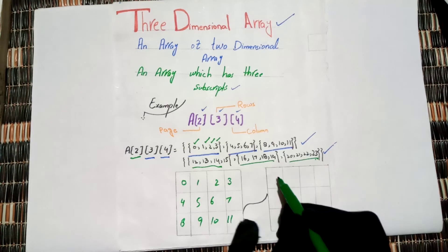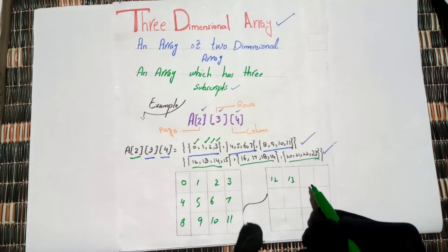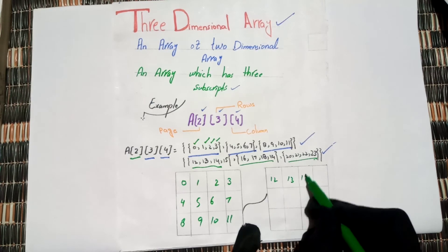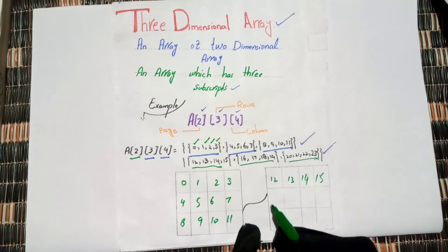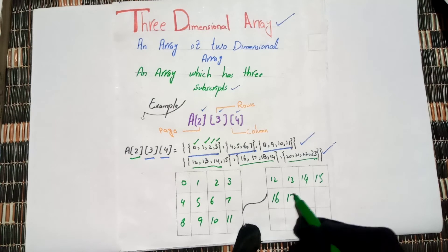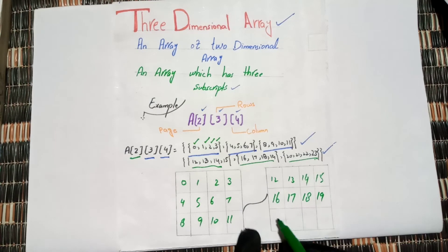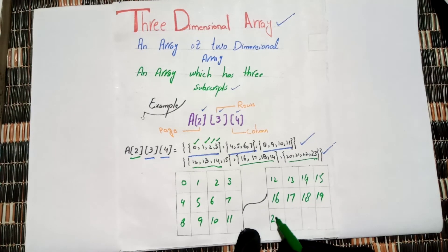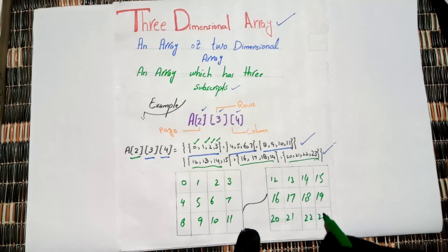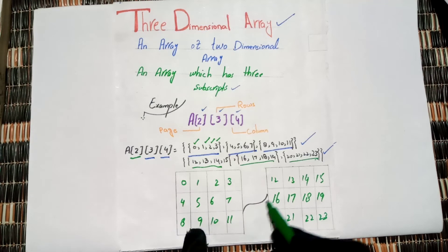Then we start the second array: 12, 13, 14, 15, 16, 17, 18, 19, 20, 21, 22, 23.